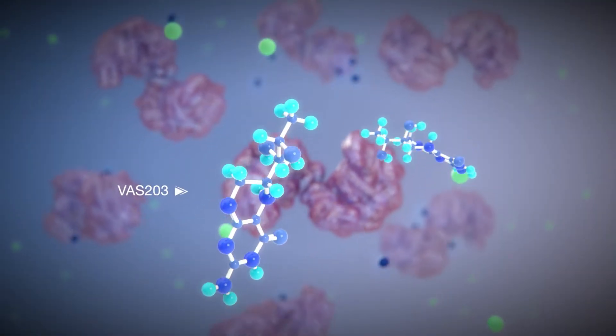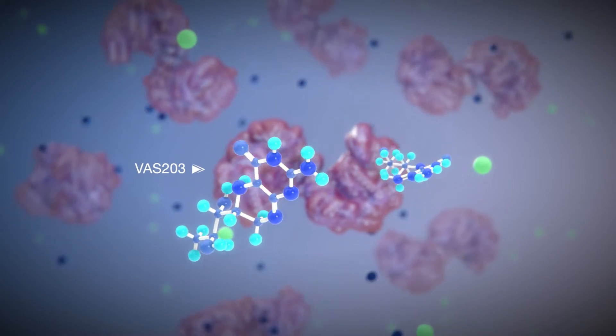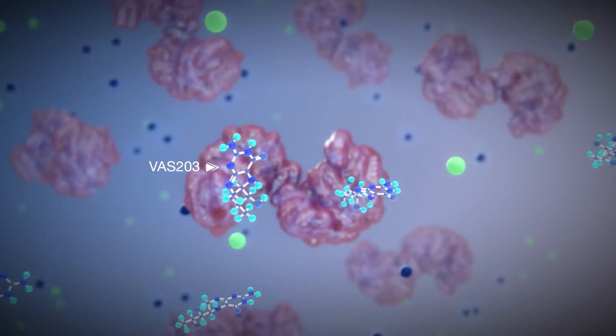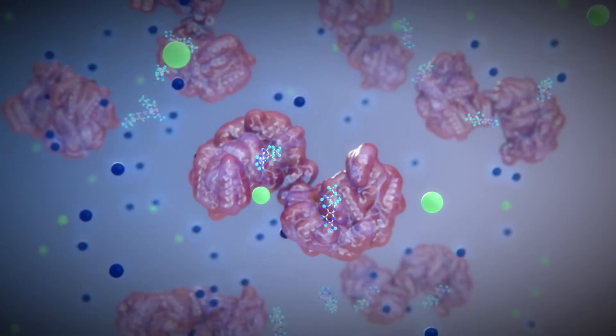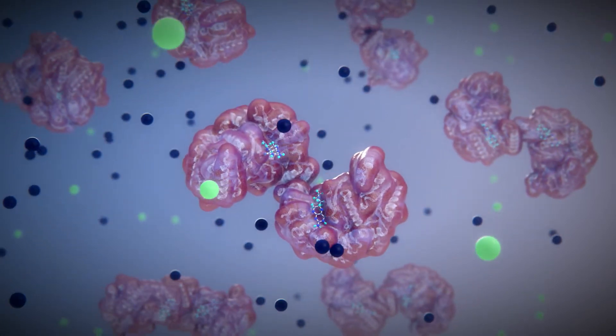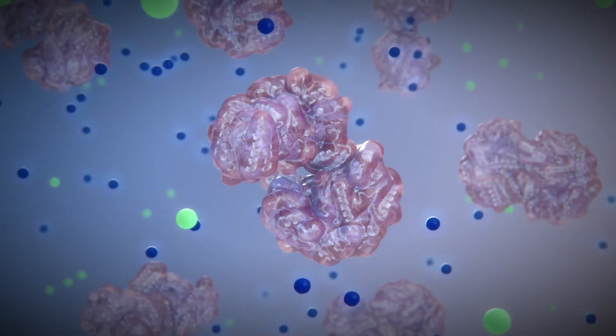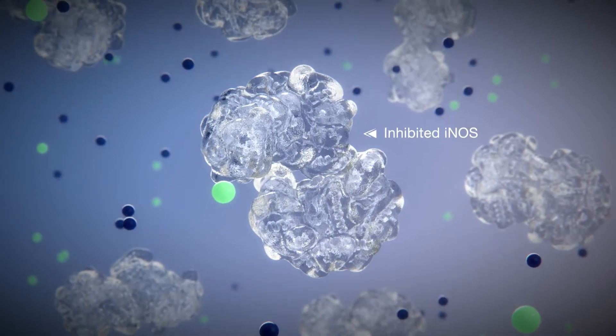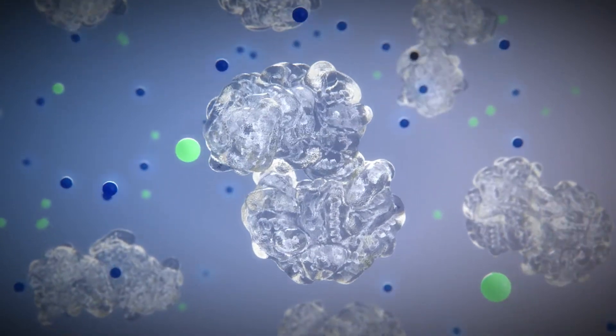In contrast to most previous NO synthase inhibitors, VAS-203 does not bind NOS at the L-arginine binding site. VAS-203 is a cofactor analog that replaces BH4 which is essential for dimerization of INOS to produce NO.